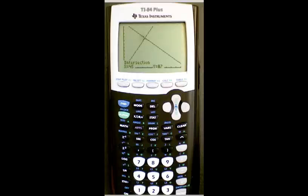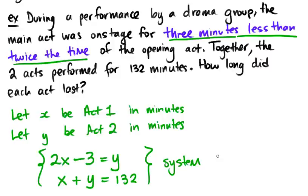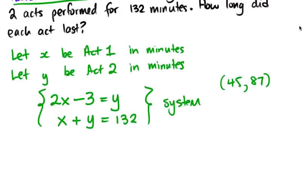Using technology, the solution to this system is the coordinate where x equals 45 and y equals 87. We can interpret that as a final answer in a sentence: Act one was 45 minutes and act two was 87 minutes.